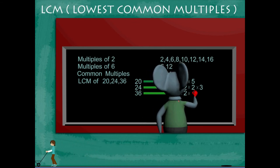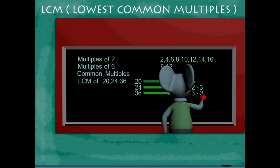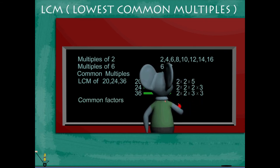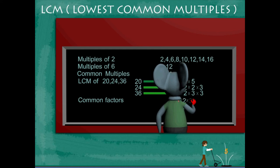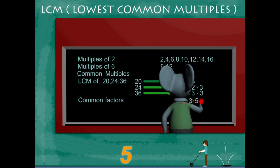He now selects the common factors: 2 and 5 of 20, 2 and 3 of 24, and 2 and 3 of 36. This makes 2 into 2 into 3 into 5 into 2 into 3.